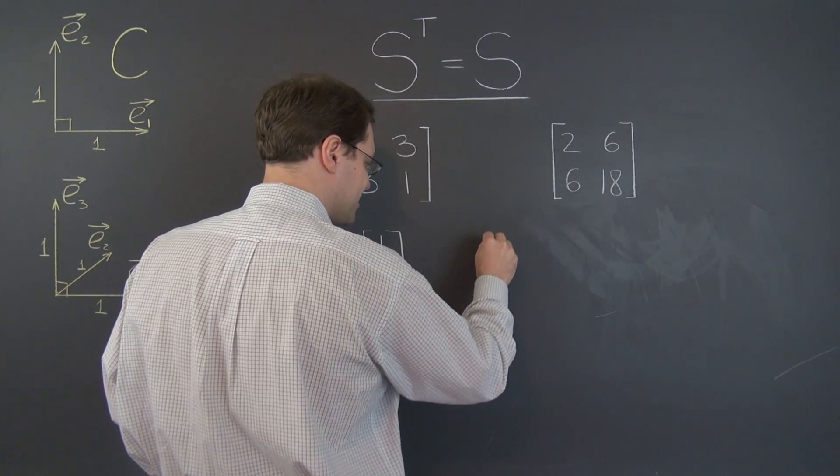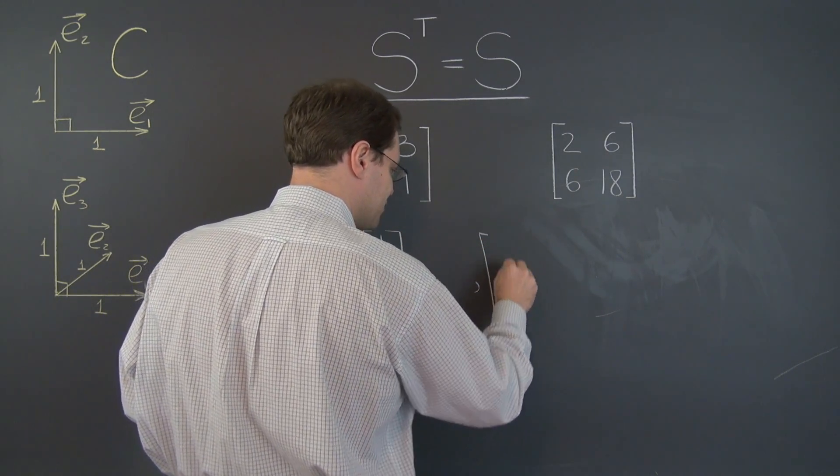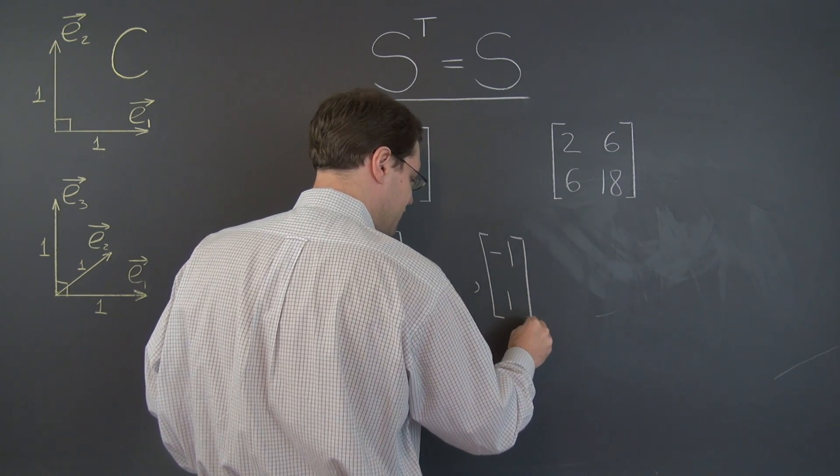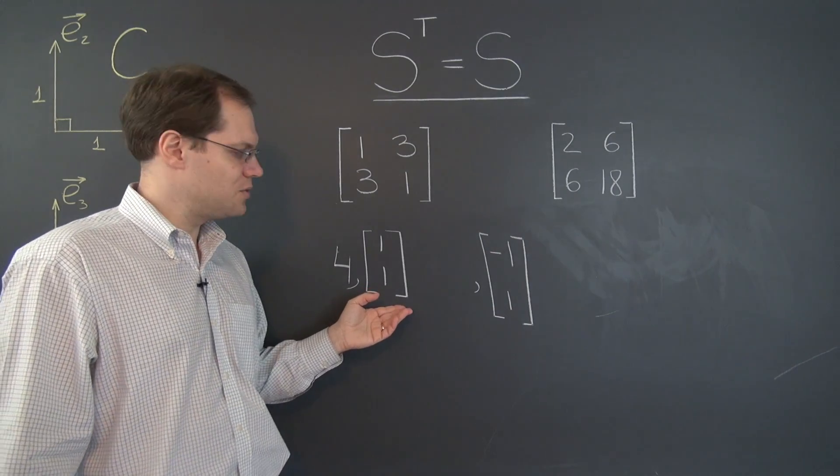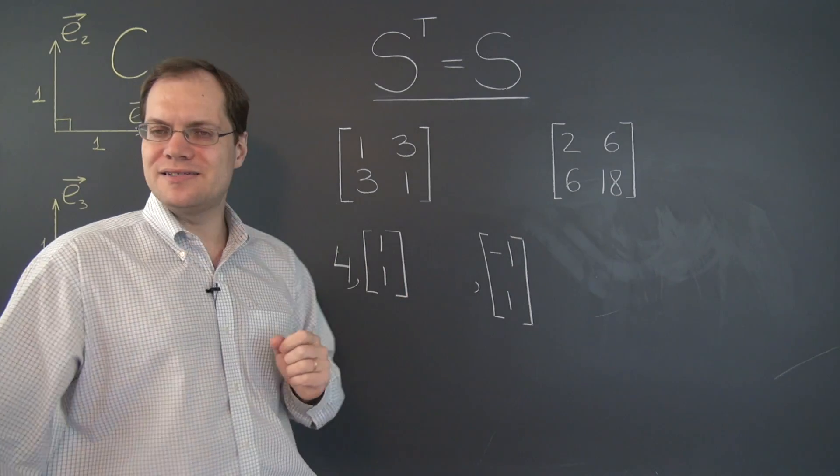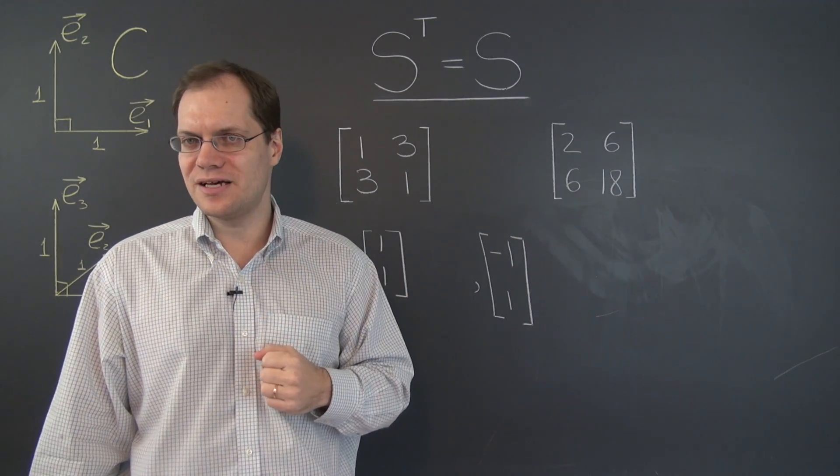Well, this immediately tells us that the other eigenvector is minus 1, 1. That's the only way to come up with a vector that's orthogonal to this one. You switch the entries and you put a minus sign in front of one of them as we discussed before.